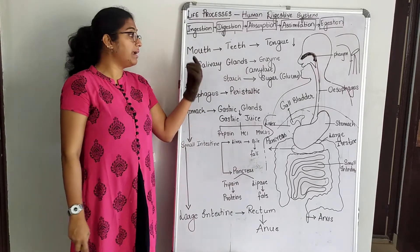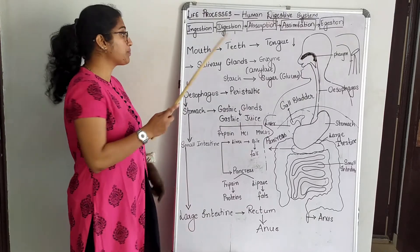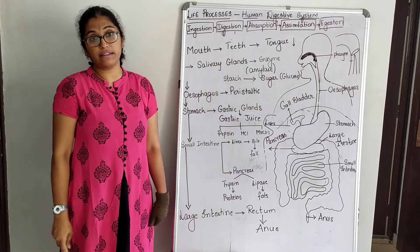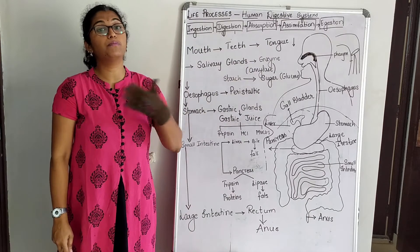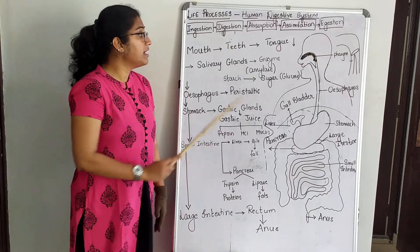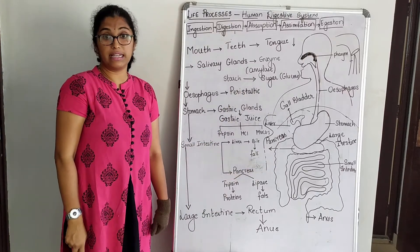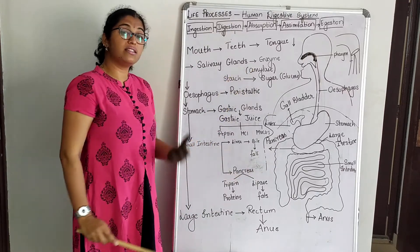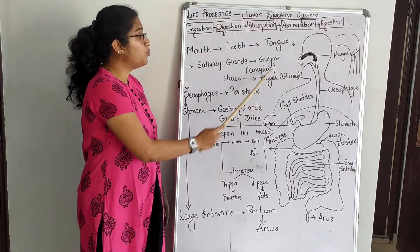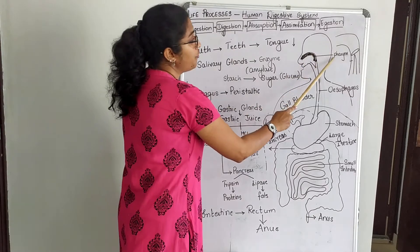Through the mouth, we intake food, and the mouth is where the first physical digestion of food takes place. As soon as food enters the mouth, teeth help in cutting, chewing, and grinding the food. The tongue helps in movement of the food. Salivary glands contain saliva, which has an enzyme known as salivary amylase that digests the starch present in the food into sugar called glucose.